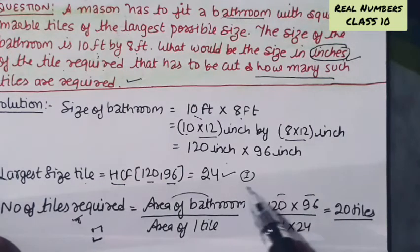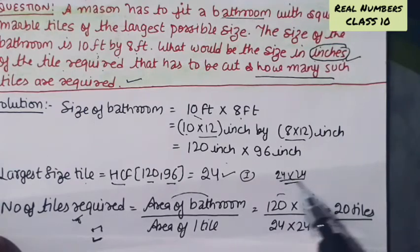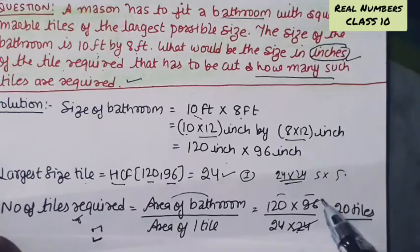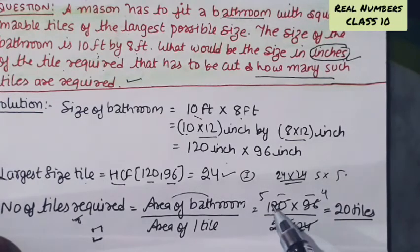And area of the tile, because this is a square tile, so this area is 24 by 24, side into side, 24 into 24. When you cancel it, then 5 into 4 is nothing but 20 tiles.